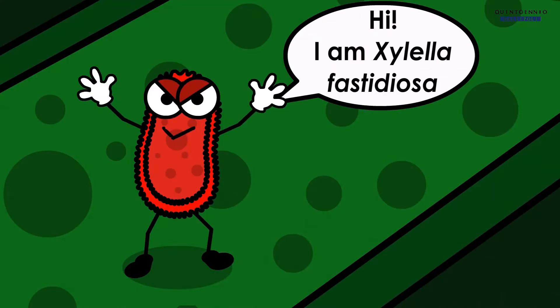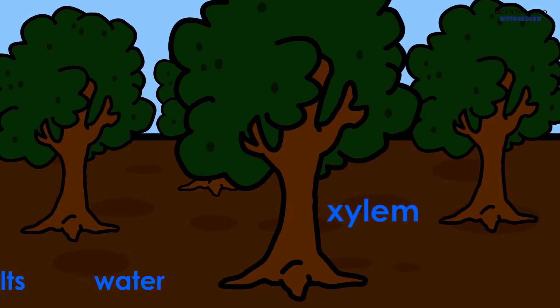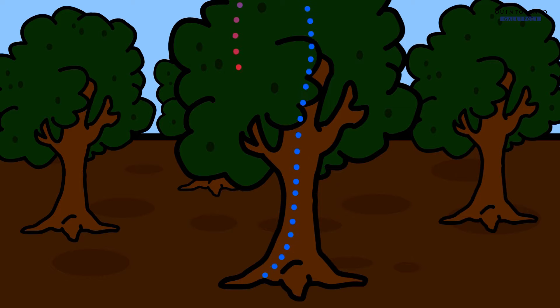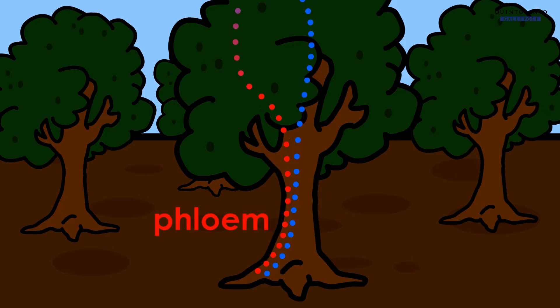What is Xylella fastidiosa? It's a bacteria that lives in a plant's xylem. Xylem is a part of the circulatory system that a plant uses to transport water and nutrients from the soil into the leaves. The liquid that flows up the xylem layer is called xylem. After photosynthesis takes place in the leaves, the xylem flows back down to the roots in veins called the phloem.